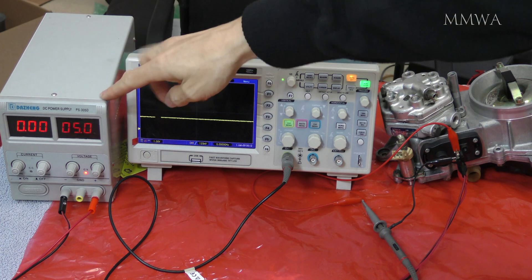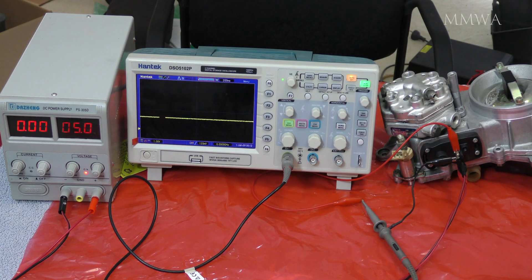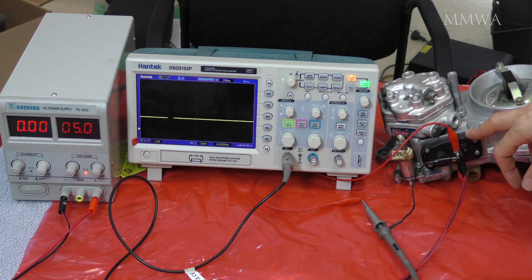So I've got a bench power supply here set to 5 volts. I've also current limited it to 50 milliamps just in case I make a mistake. I don't want to destroy my airflow meter potentiometer although that's pretty unlikely.